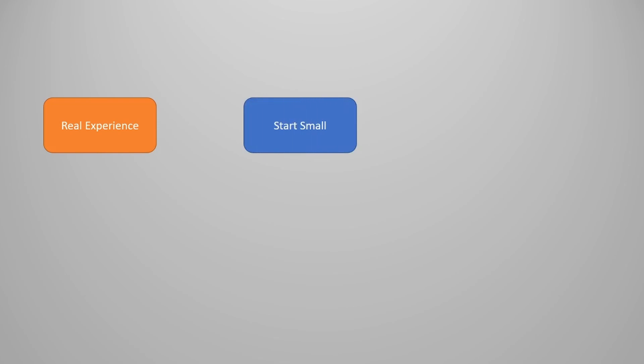Working on these projects molds your skills to the real-life environment and helps you gear up to be a part of the industry. You can always start from beginner level projects and slowly transcend to advanced projects. Prerequisites of a cyber security professional include coding skills, networking skills, knowledge about operating systems, and knowledge of cyber security concepts and algorithms. By working on the projects I am about to tell, you will gain experience in all these skills.